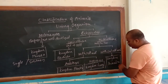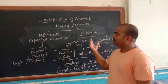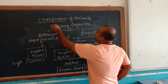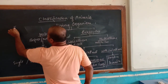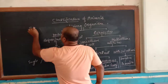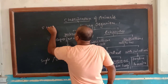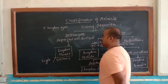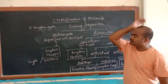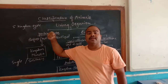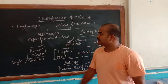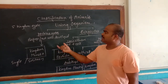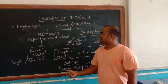In that whole chart, we are studying about a five kingdom system. That is why this classification is known as the five kingdom system. There are many types — three kingdom system, five kingdom system, seven kingdom system, nine kingdom system — but in 10th standard we study only the five kingdom system.